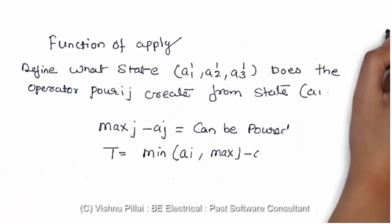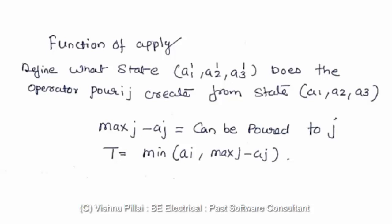You will have to define a certain benchmark or function to apply. Define what state a1, a2, a3 does the operator pour i to j create from state a1, a2, a3. That is the initial state and the final state.